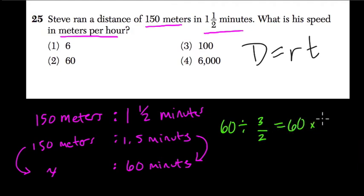So it's 60 times the reciprocal, 2 over 3. And that's equal to 120 over 3, which is 40. So that means this goes into it 40 times. So to take 150 meters and multiply that by 40, times 40, just like we did here to keep it proportional.